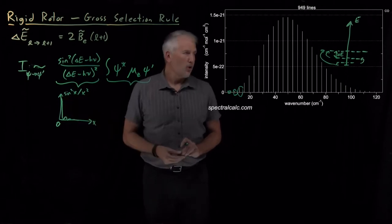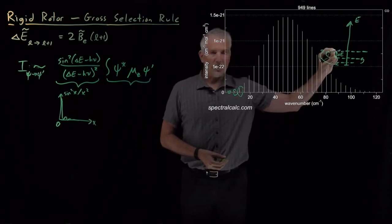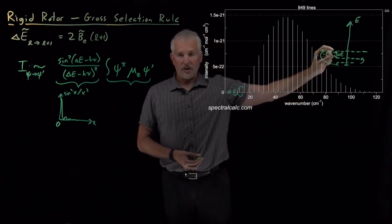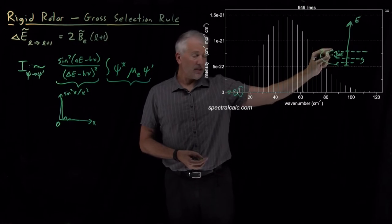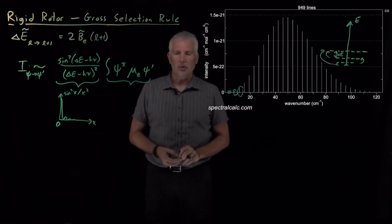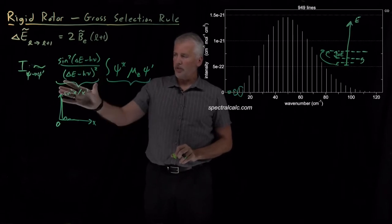In other words, if I want to induce this transition, I need to feed the molecule light with a photon with that much energy, very much different than that energy, and it won't absorb the photon, or I'll have a very, very small chance of absorbing that photon. So that's really all we'll say about this first term.